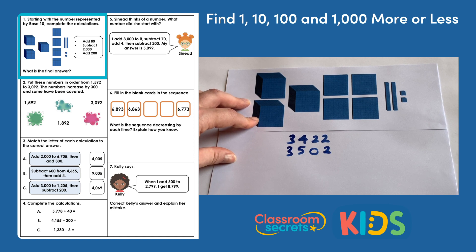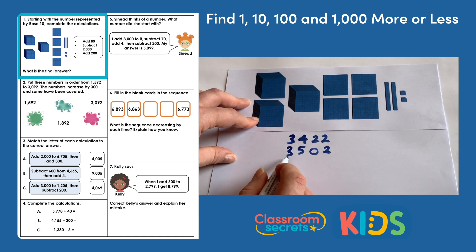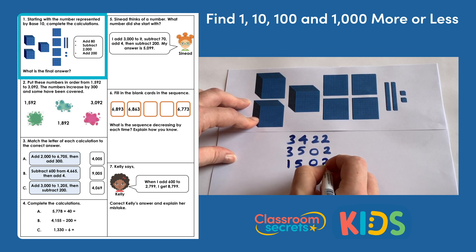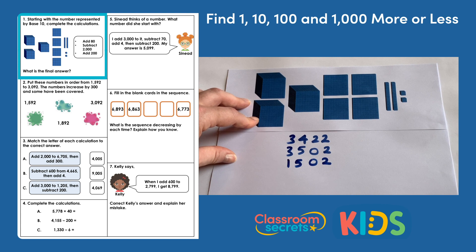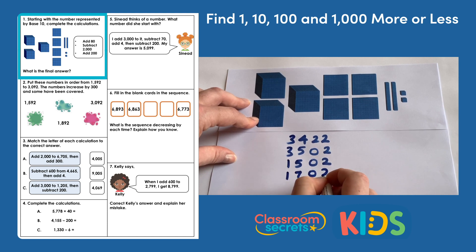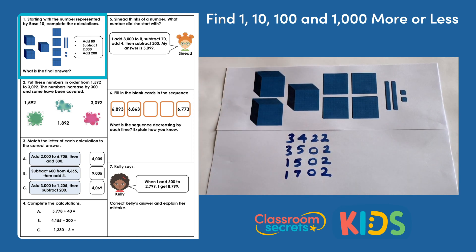After that we have to subtract two thousand, so taking two of the thousands away from three thousand, that will leave us with one thousand five hundred and two. And then we have to add two hundreds — we have five hundreds already — so adding another two hundreds will mean we have one thousand seven hundred and two.